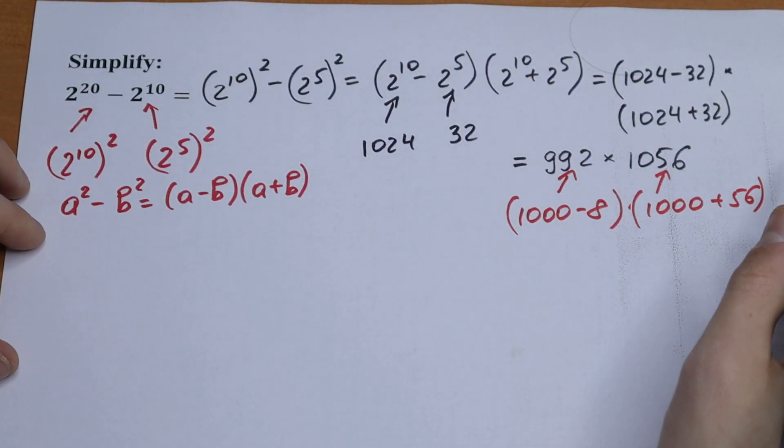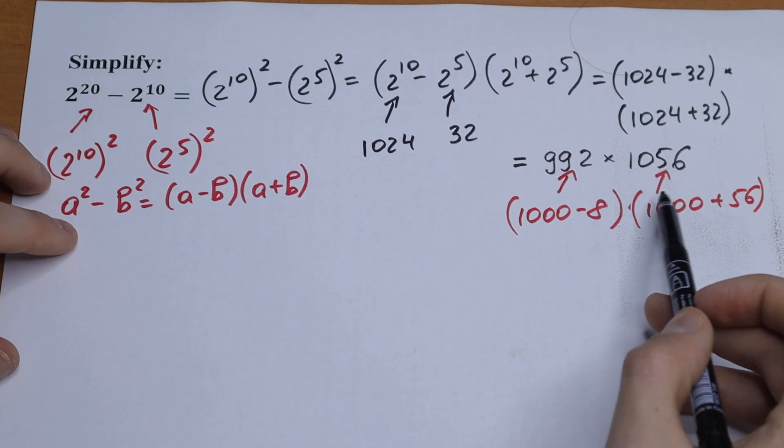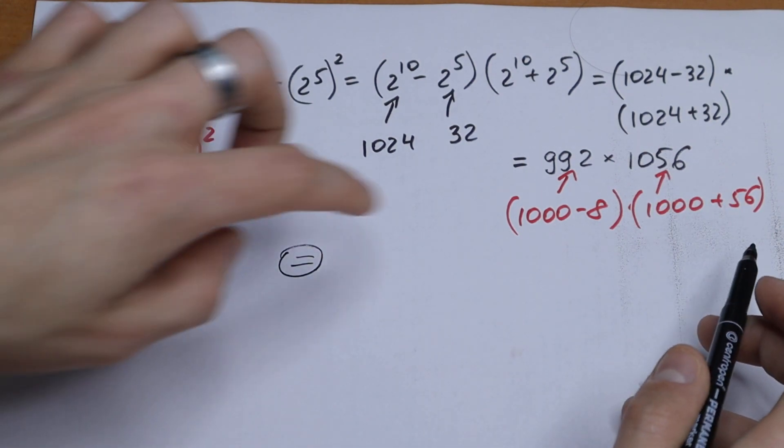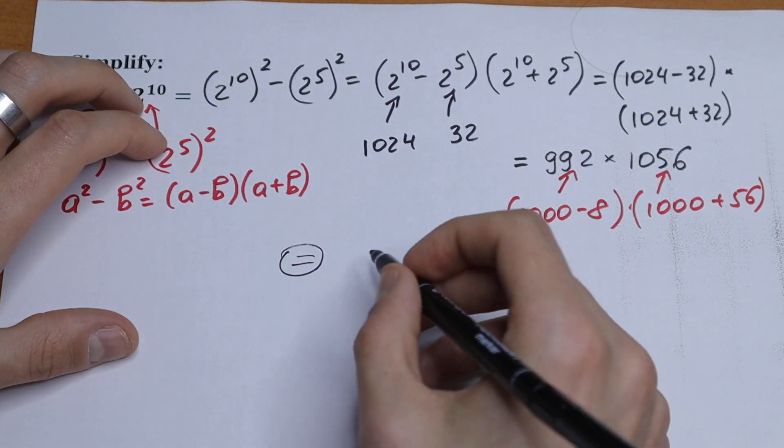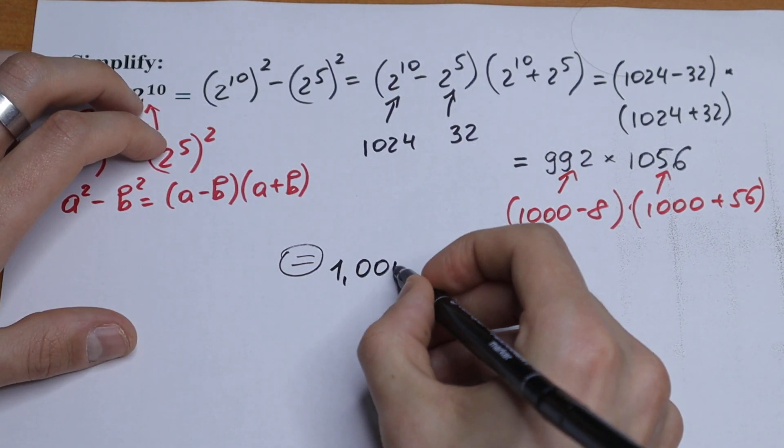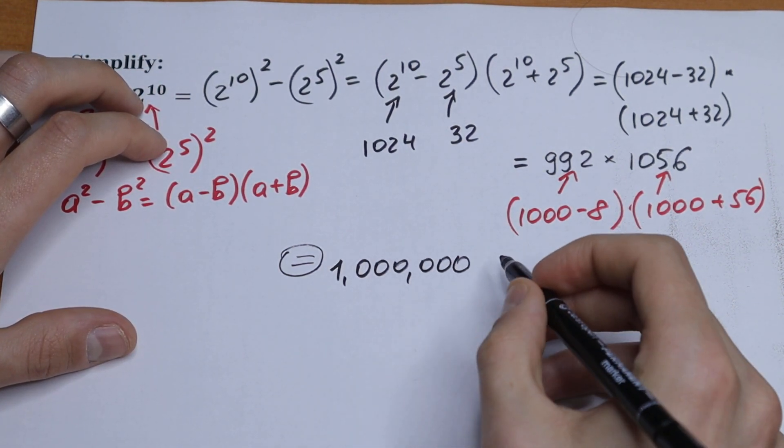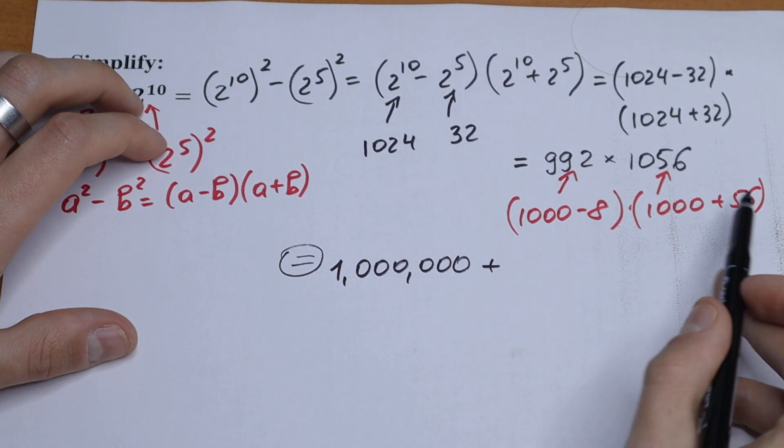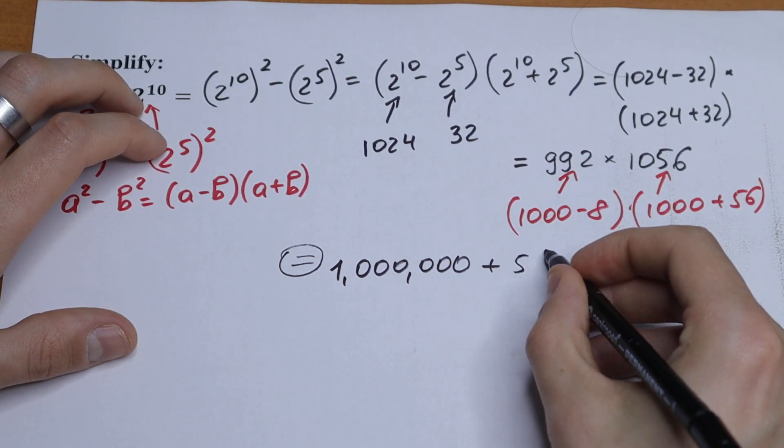How can we do this? Using a simple method, just multiplying these parentheses. So we will have 1000 times 1000, which gives us 1 million, plus 56 times 1000, which will be 56 thousand.